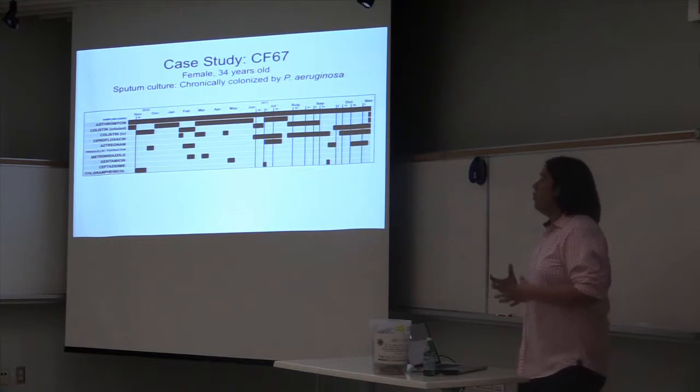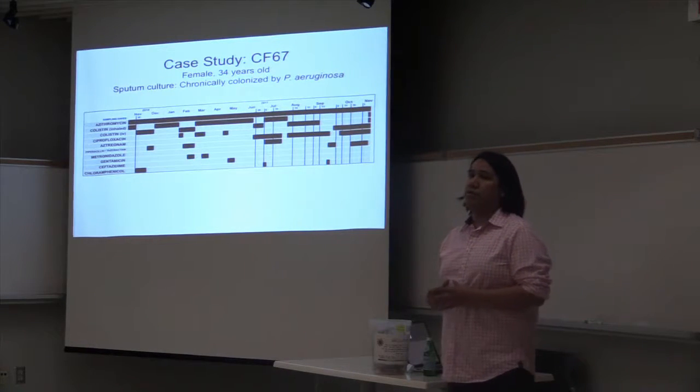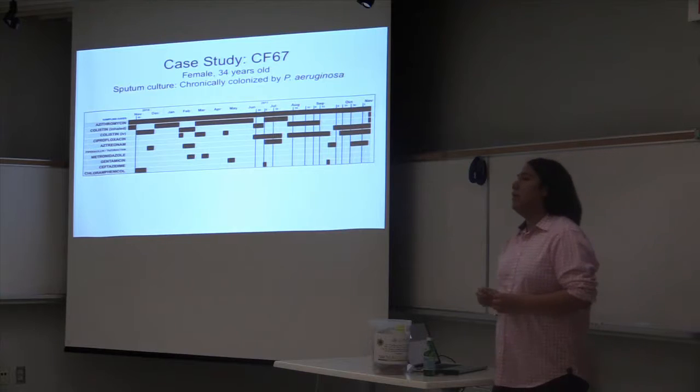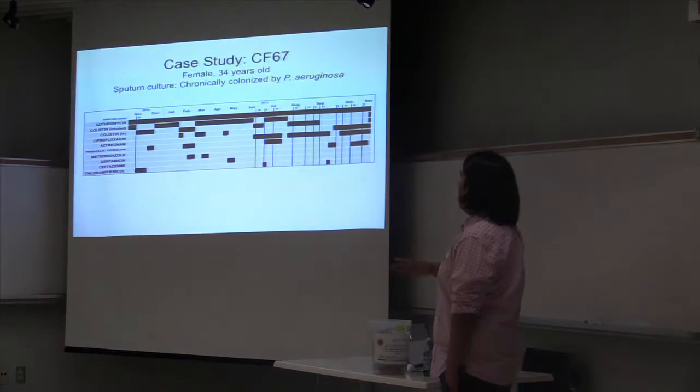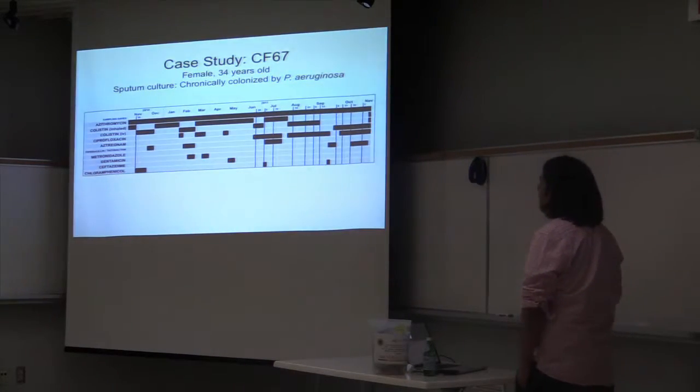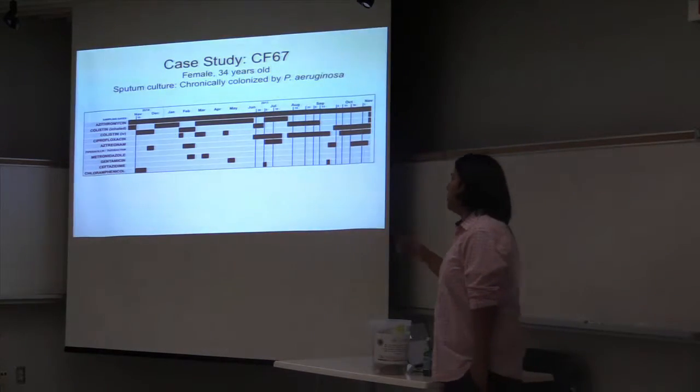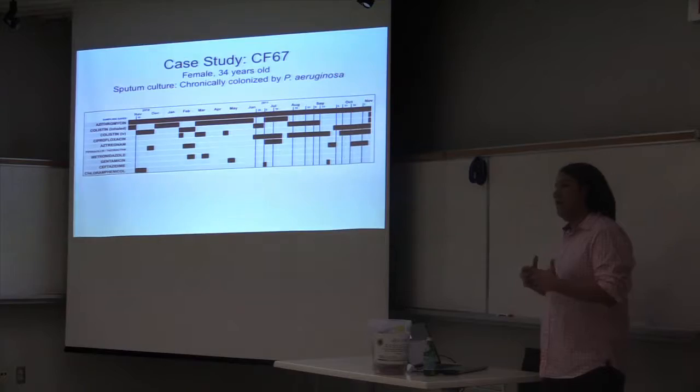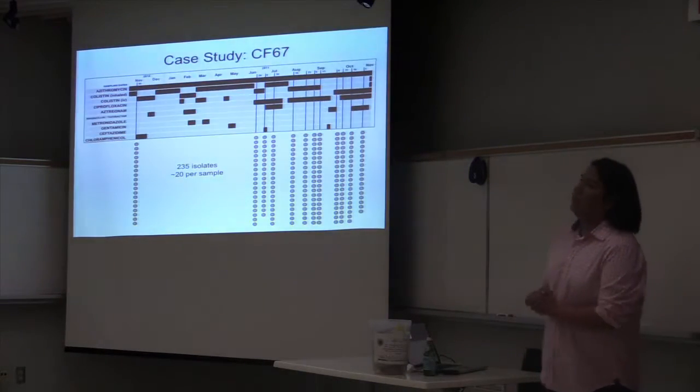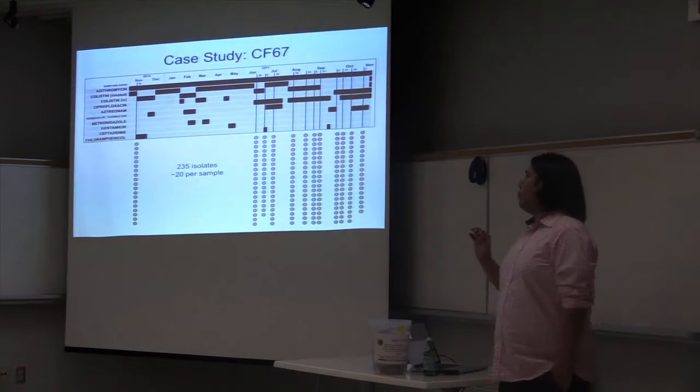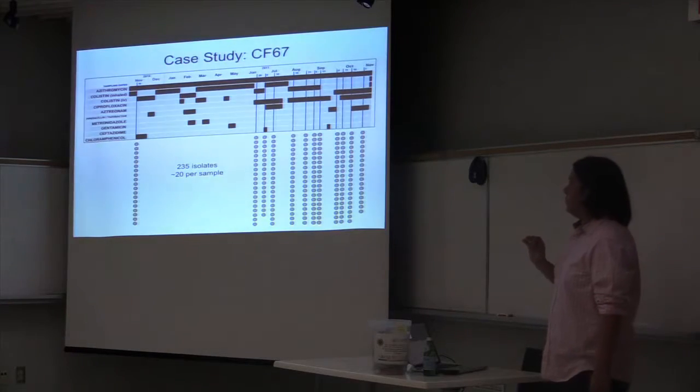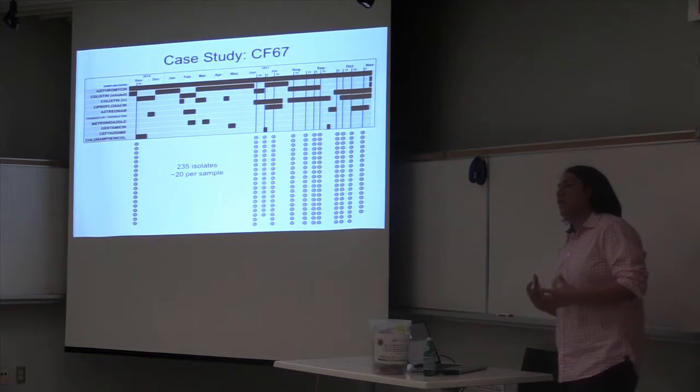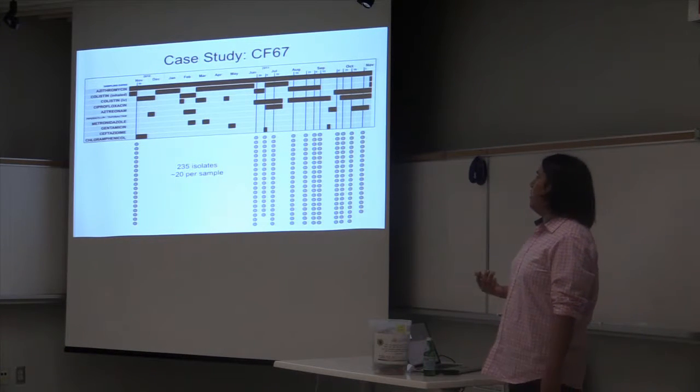CF67 was a 34-year-old female who, at the time of the study, and whose periodic culture revealed that the most prevalent bacteria in the lung was Pseudomonas aeruginosa. Our collaborators from a local cystic fibrosis clinic collected 12 sputum samples across the span of a year, from November 2010 to November 2011. We also have other clinical information, such as antibiotics. As we can see there, every row represents an antibiotic that was given to the patient, and the black bars are when the patient was actually taking that medicine. Another member of our lab, Sean Clark, grew Pseudomonas aeruginosa colonies from each of these sputum samples, and he isolated approximately 20 colonies per sputum sample so that it reflected the morphological diversity of Pseudomonas aeruginosa in each of these samples, for a total of 235 isolates.